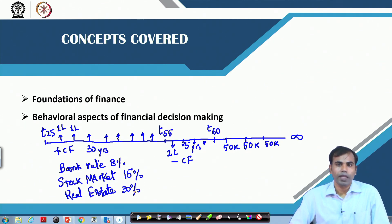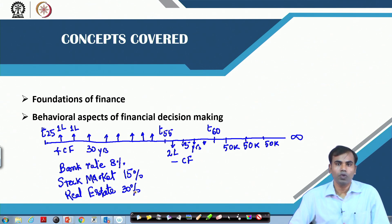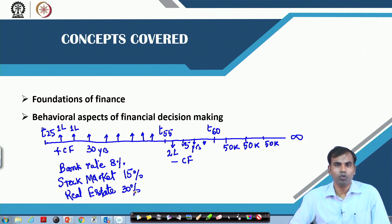This is where your theoretical financial concepts merge with the behavioral aspects of decision making. If you are a risk seeker who can take a lot of risk, you would like to invest in risky avenues such as the stock market or real estate. If you are risk averse and do not want to take a lot of risk, you would invest in safe bank deposits. This course will focus on how traditional finance theory can be merged with the behavioral aspect of decision making to make better financial decisions.